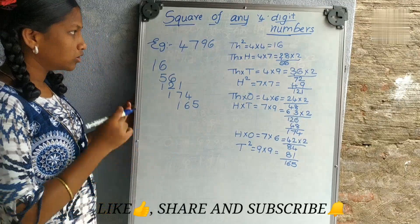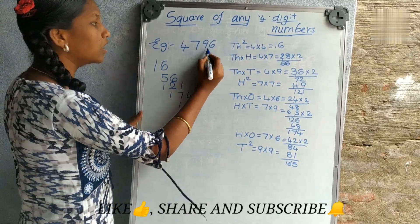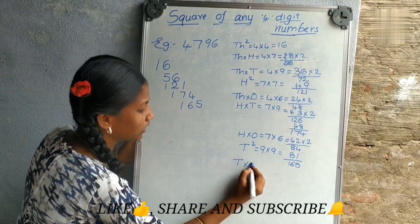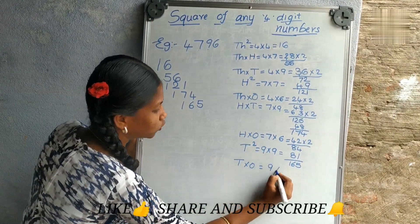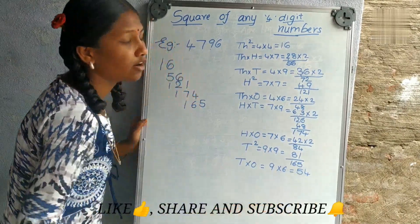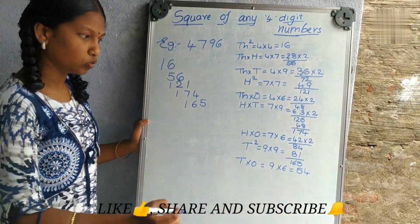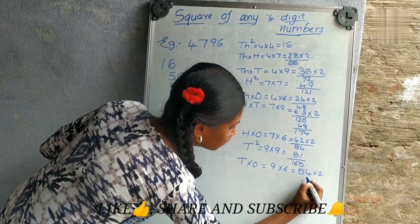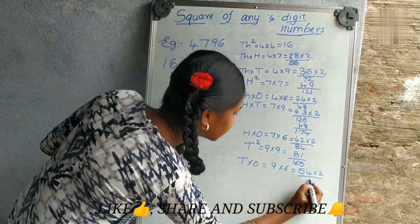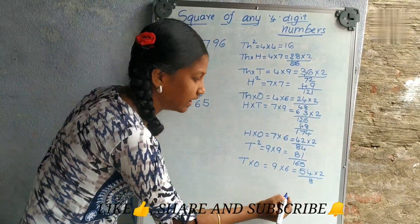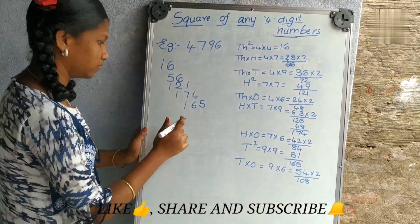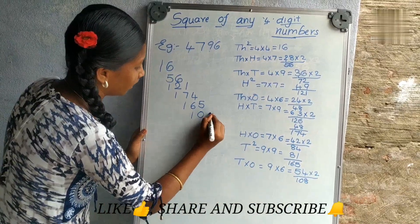Now we have to multiply the tens digit by the ones digit. That is 9 into 6 — 9 sixes are 54. Now we have to multiply the product with 2: two fours are 8, two fives are 10. Write this number here — 108.